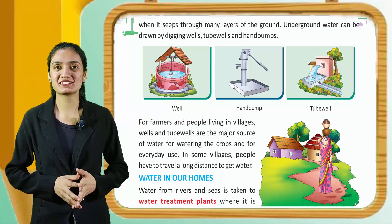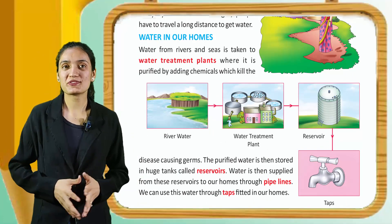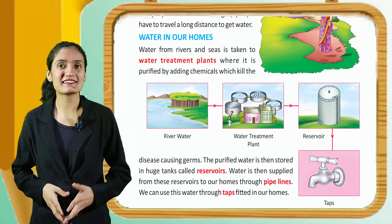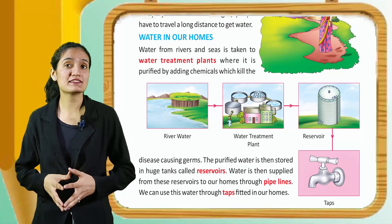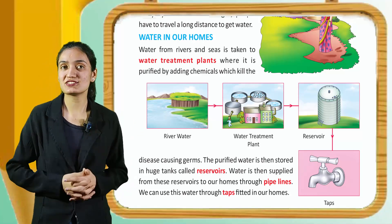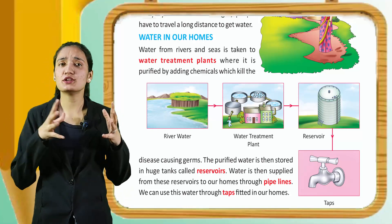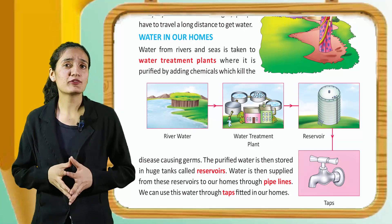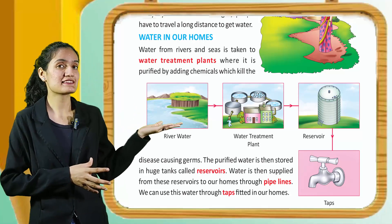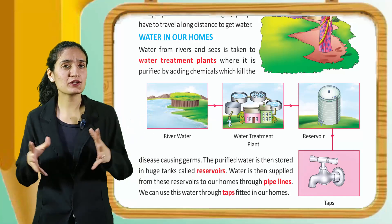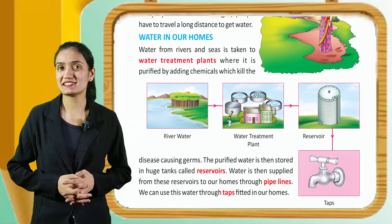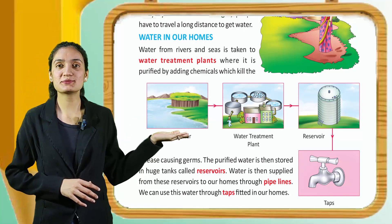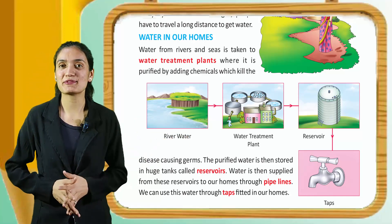In some villages, people have to travel long distances to get water. Water in our homes: water from rivers and lakes is taken to water treatment plants where it is purified by adding chemicals that kill disease-causing germs. The purified water is then stored in huge tanks called reservoirs. Water is then supplied from these reservoirs to our homes through pipelines and taps.